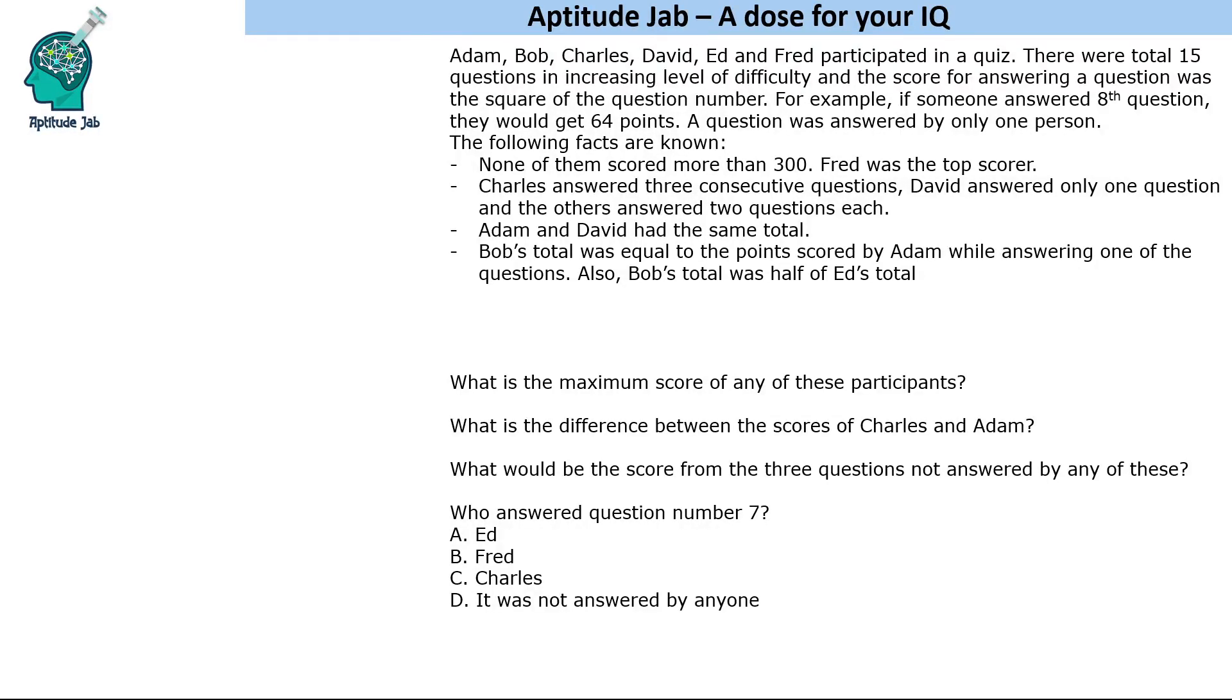There were 15 questions in increasing level of difficulty, and the score for answering a question was the square of the question number. For example, question 1 gives 1 point, question 2 gives 4 points, question 3 gives 9 points, question 4 gives 16 points, and so on. For question 15, you would get 225 points.